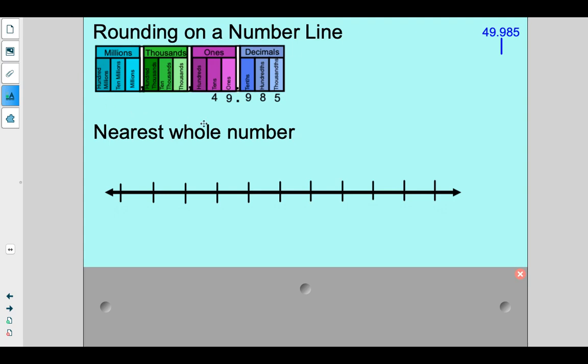First, I have my place value chart, which we've checked out earlier, right? So I took my number that I'm going to be rounding. I'm going to be rounding 49 and 985 thousandths on my number line.